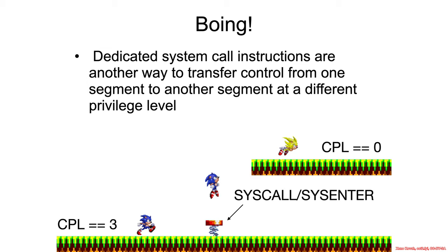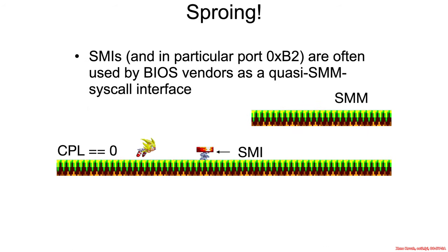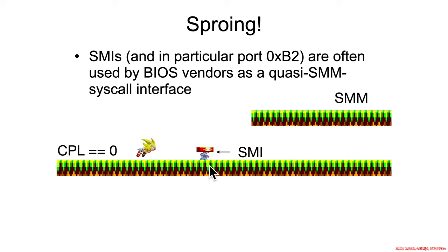Here's how to think about it: you learned about system calls in architecture courses — a way to transition from current privilege level 3 (user space) up to kernel space at CPL 0. Now think about code running in kernel space at CPL 0, because port I/O requires that, assuming the I/O privilege level is set to zero. Then that code hits an SMI — perhaps via writing to port B2 — which transitions it up into SMM, where it becomes dark sonic instead of supersonic.